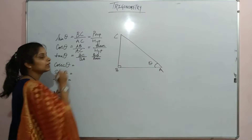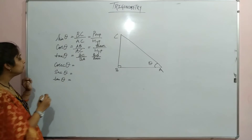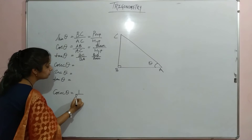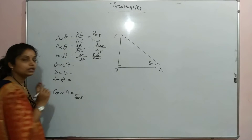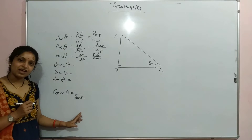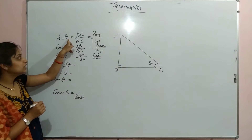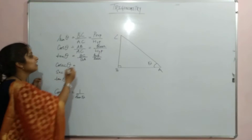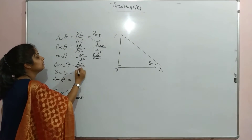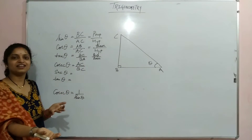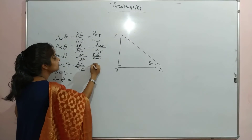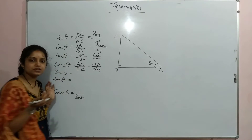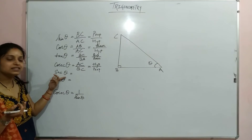Now, cosec is the reciprocal of sine. Since sine is BC upon AC, cosec is AC upon BC — just a reciprocal of sine. This can also be written as hypotenuse upon perpendicular.